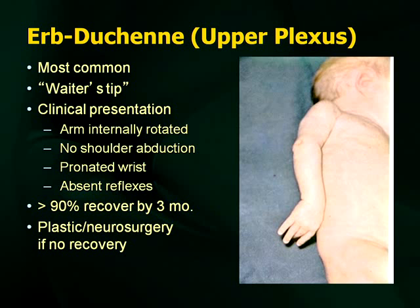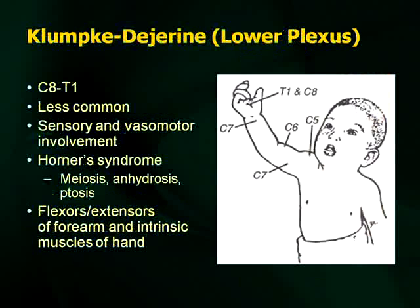For a particularly severe brachial plexus injury, you can do an MRI scan of the brachial plexus to evaluate whether you have avulsion of the plexus, which leads to poorer prognosis. Not every baby needs an MRI, but if it's not better by about three months, you can look at the brachial plexus. Neurosurgeons that do corrective brachial plexus surgery are few and far between. The lower plexus injury, much less common — C8-T1 — means intrinsic hand muscles are more involved and you might see a Horner syndrome: miosis, anhidrosis, and ptosis.